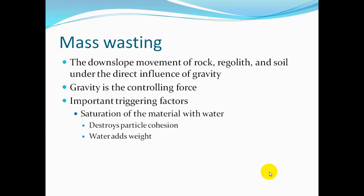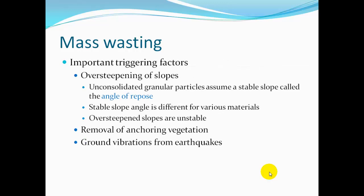Mass wasting is the downslope movement of rock, regolith, and soil under the direct influence of gravity. Gravity is the controlling force. Important triggering factors include saturation of material with water — the more saturated the soil, the more likely it is to slide downslope, as water destroys particle cohesion and adds weight. Over-steepening of slopes is another trigger. Unconsolidated granular particles assume a stable slope called the angle of repose — the steepest angle at which those materials can sit without sliding. Going above that angle causes the particles to slide downslope. The stable slope angle differs for various materials.